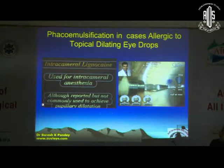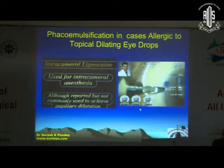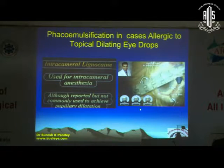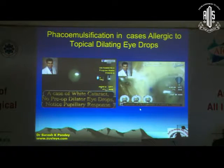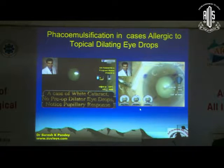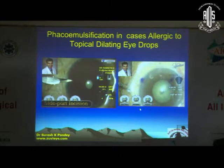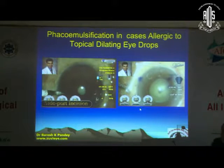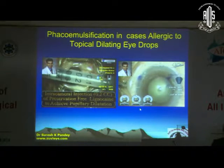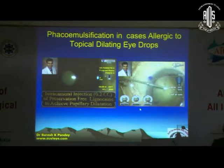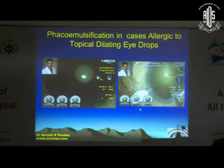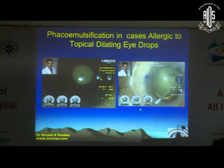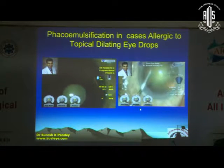There is a short video showing intracameral injection of preservative-free lignocaine to dilate the pupil. Sometimes we encounter cases of topical allergy to dilating drops — these are very rare, but in these cases we can use preservative-free lignocaine, 0.1 cc in the anterior chamber, to achieve pupillary dilation. Here you can see the injection of preservative-free lignocaine in the anterior chamber. Once you inject it, you wait a couple of minutes and you will see dilation of the pupil, and this can be facilitated by viscomydriasis.